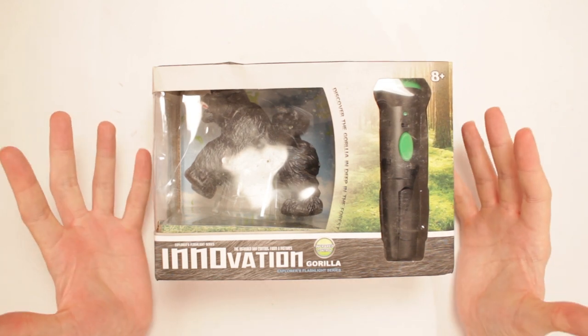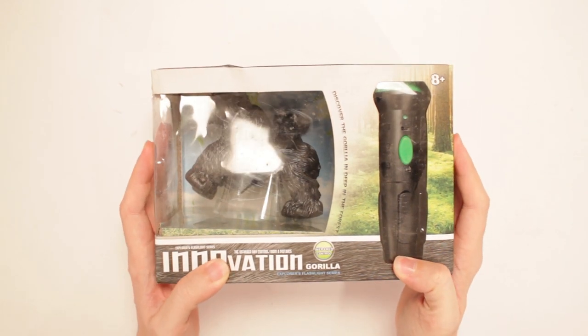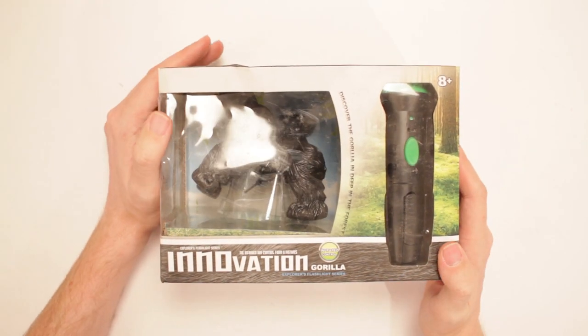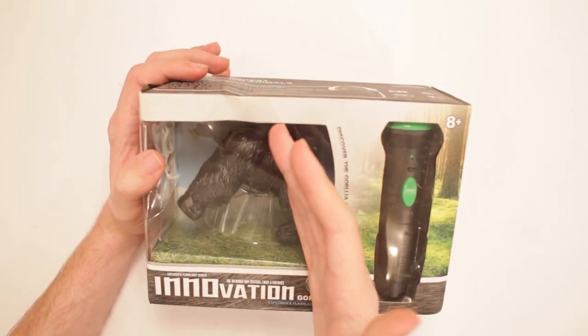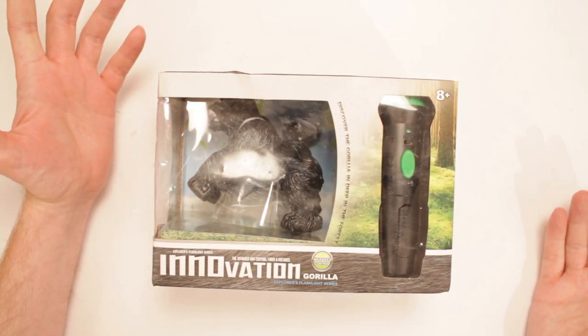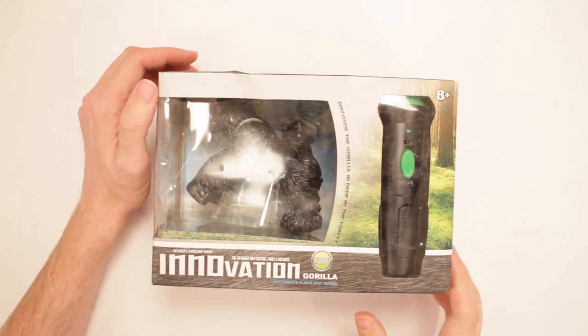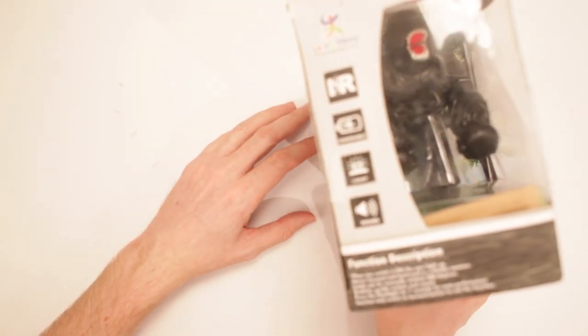This is Innovation Gorilla Explorers Flashlight Series Infrared Ray Control. What? What does all this mean? I've never seen anything like this. There's a gorilla, there's a flashlight, somehow they're infrared controlled together. Discover the gorilla deep in the forest. Well, I found him, he's right there. He's actually in a box with some plastic see-through parts.